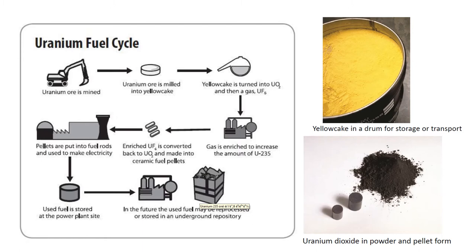The vast majority of all nuclear power reactors require enriched uranium fuel in which the proportion of uranium-235 isotopes has been raised from the natural level of 0.7% to about 3.5% to 5%. About 27 tons of fresh fuel is required each year by a 1,000-megawatt nuclear reactor. In contrast, a coal power station requires more than 2.5 million tons of coal to produce as much electricity.